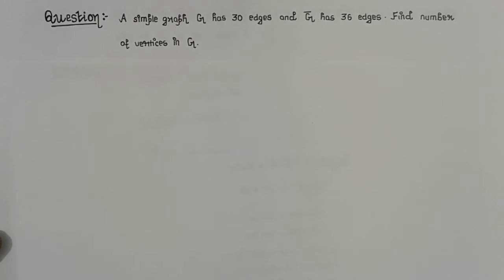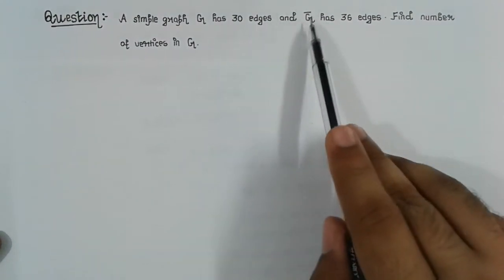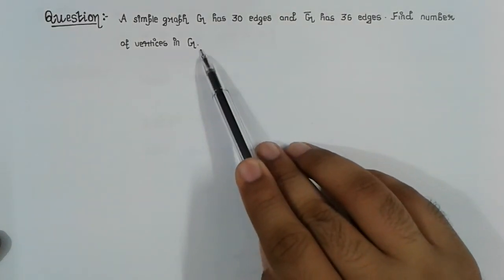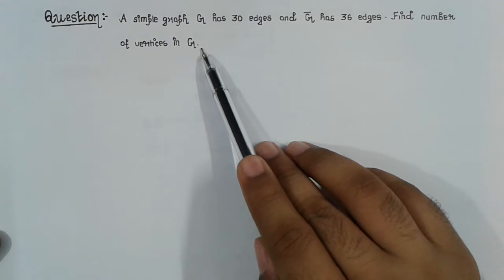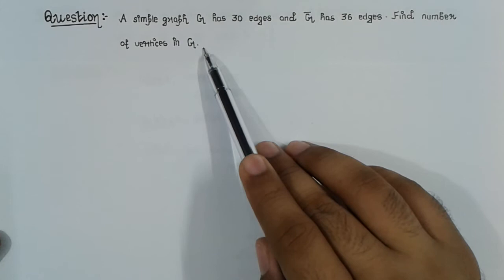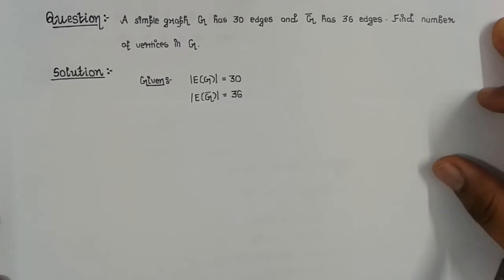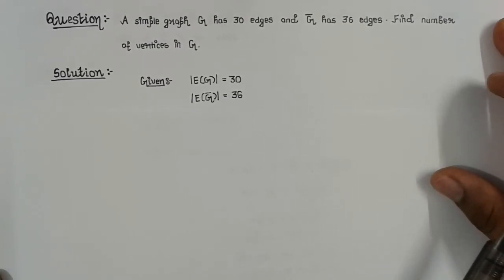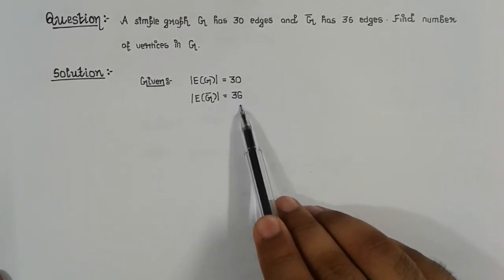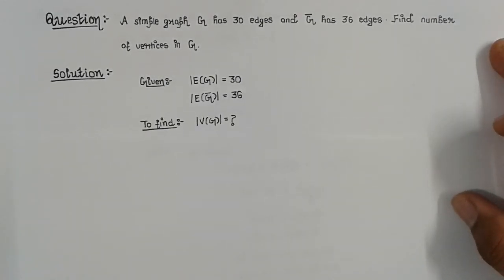This is problem number 2. A simple graph G has 30 edges and G-bar has 36 edges. Find the number of vertices in graph G. So we have: edges in graph G equals 30, edges in graph G-bar equals 36, and we need to find the number of vertices in graph G.